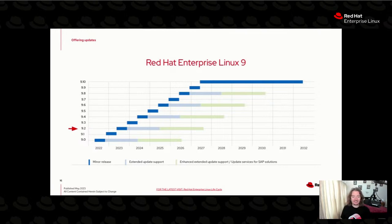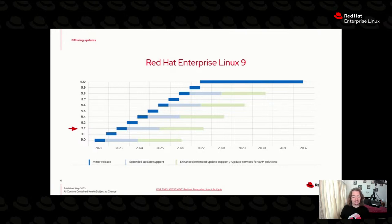Minor releases come out every six months. You may be saying that's too much and you can't recertify your stack that often. The good news is you can actually stay on even-numbered releases, which means you could recertify once a year. Or you can get our EUS add-on — Extended Update Support. Don't confuse that with ELS, which is lifecycle. EUS is for minor releases, and you can actually stay on even-numbered minor releases for up to two years with the EUS add-on.